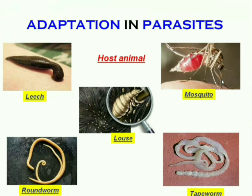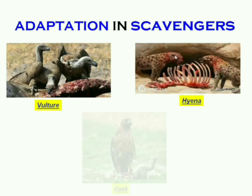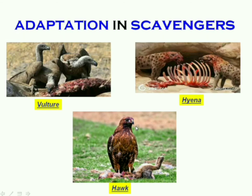The host animal is the animal on which the parasite sits and obtains its food. Scavengers are animals that eat the flesh of dead animals — examples are vultures, hyenas, and hawks. All these animals eat the flesh of dead animals.